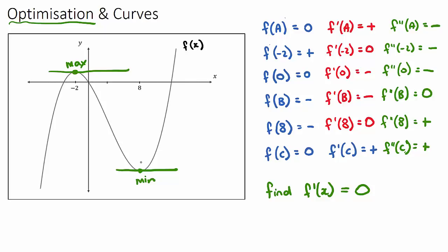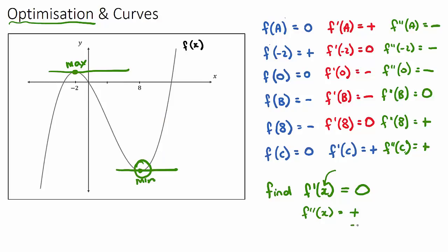To check if it is a maximum or a minimum, the most common way is to take the x value you found to be an optimum and substitute it into the second derivative. If the second derivative comes out as a positive answer, you have the minimum — because the minimum is part of a positive concavity. If the second derivative is negative, you have the maximum. That is the most common way to determine whether you have maximized or minimized the function.